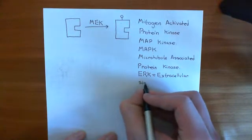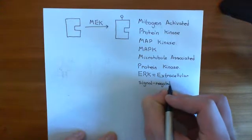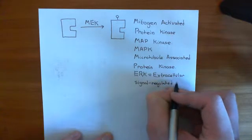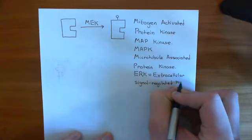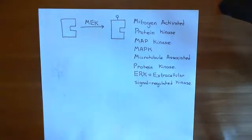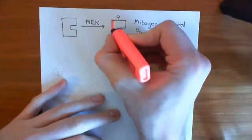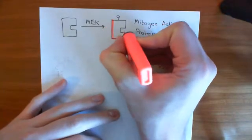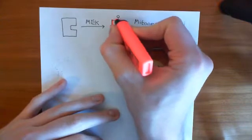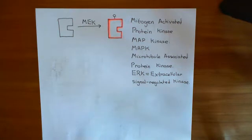Extracellular signal-regulated kinase. Don't let the different names for all these proteins confuse you — they're all talking about the same thing. That's one of the things that can be really confusing about this pathway, because different flow diagrams by different people call the same proteins different things, making you wonder if it's a different pathway. It's not — they're just using different names.